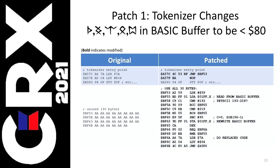So here's the first patch — patch number one. This patch allows shifted characters of our choosing, the ligatures specifically, to be successfully tokenized by BASIC. This is typical of a patch — you find an entry point, redirect it to your own code, and then jump back. This patch made use of 30 unused bytes in the BASIC ROM area — there are all those AAAs you see over there — and I used every one of those bytes. I had to squeeze it down: not set flags when I didn't know their values, things like that. But I got it to fit.